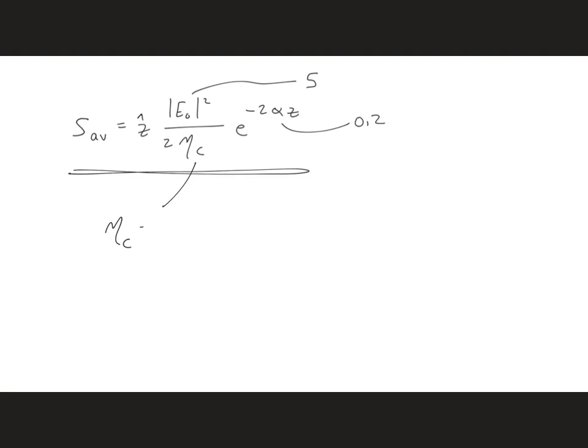So eta is going to be complex. We have 1 plus j alpha over sigma, which gives us 1 plus j times 0.05. And using geometry with the real axis and the imaginary axis, we have 0.05, 0.05.